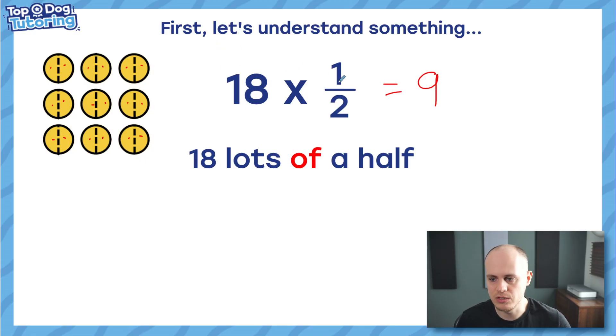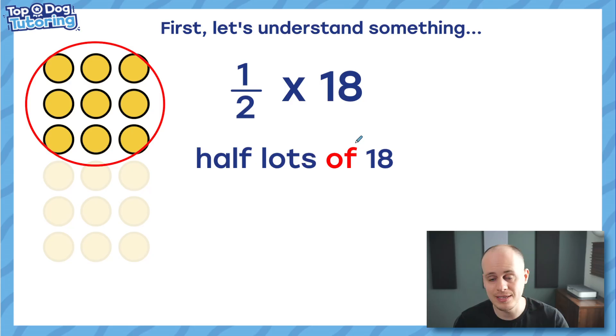So interestingly, 18 lots of a half ends up being the same as 18 divided by two, right? And that's a key fact for later on. So hold that there. 18 lots of a half. And of course, for good measure, just remember, we can switch these numbers around. 18 lots of a half is the same as half lots of 18.